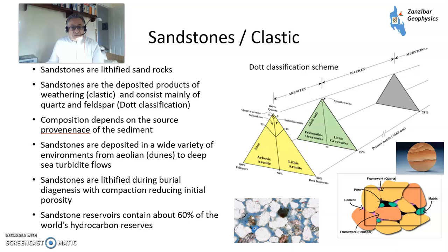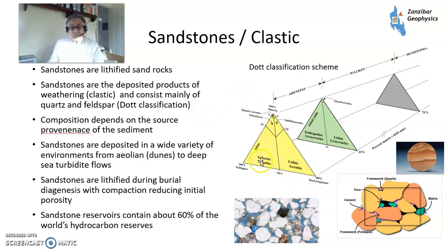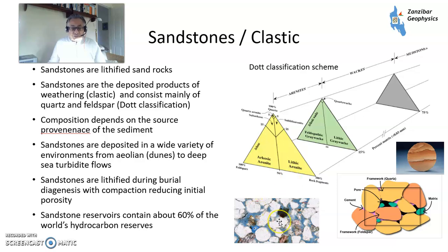The first main type of reservoir is sandstones, representing about 60% of the world's hydrocarbon reserves. Sandstones are lithified sand rocks — hard rock such as granite is eroded, then grains are transported and deposited. Sandstones are composed basically of quartz, feldspar, and lithic fragments. This is the QFL classification on a ternary diagram. The composition depends on provenance — what has been eroded to create the sandstone. They're deposited in a wide variety of environments, from aeolian sand dunes to deep-sea turbidite flows, and are lithified during burial by compaction and diagenesis — chemical alteration during burial — with cements deposited and porosity tending to decline.